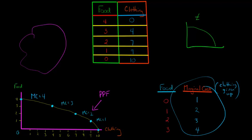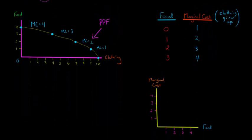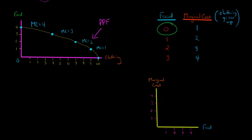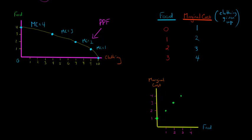We can graph this little table that we've made, and that'll tell us something about our marginal cost, which you can probably already see just from looking at the numbers. I've got food on the x-axis and marginal cost on the y-axis. When we have zero units of food, the marginal cost of producing one unit is one — so zero, one goes right here. One unit of food, the marginal cost is two. Two units of food, the marginal cost is three. And when we have three units of food and make that last piece, it costs us four units of clothing. So this is our marginal cost curve, and you see that the marginal cost is increasing.